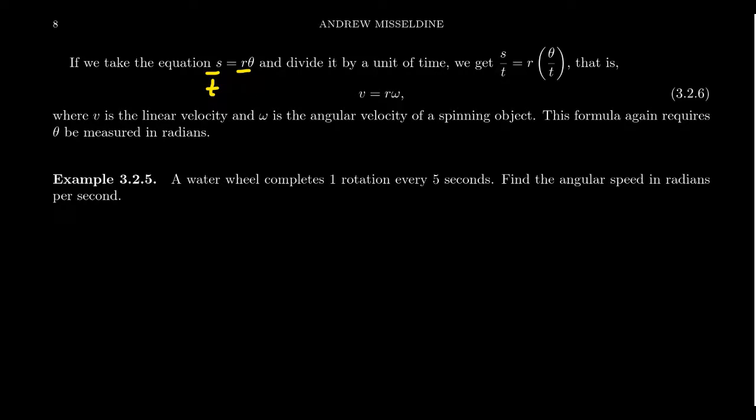For the second one, though, let's keep the radius fixed and let's take θ over T in that situation. Because θ over T, we've seen this before, this is our angular velocity, as we previously called ω.